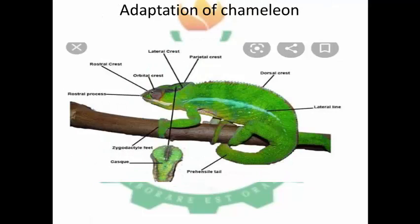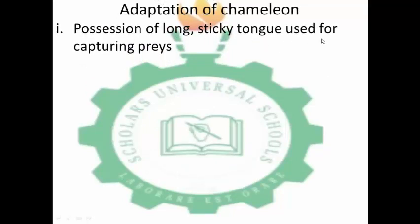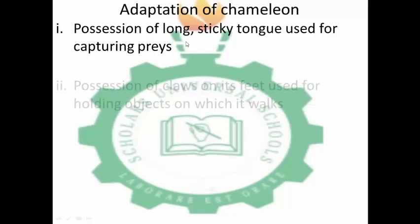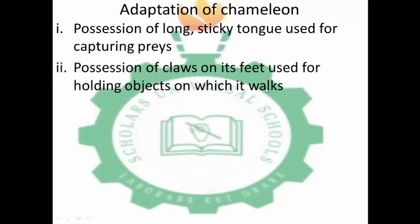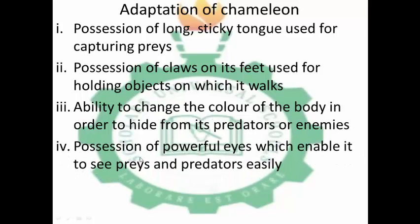Now let's look at the adaptation of the chameleon. Possession of a long sticky tongue which is used to capture prey. Possession of claws on the feet for holding objects on which it walks. The ability to change the color of the body in order to hide from predators — they change their body color to match the color of their surroundings, making them undetected by predators. Possession of powerful eyes to see prey and predators easily.